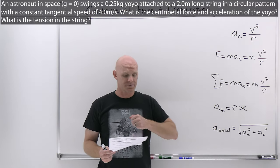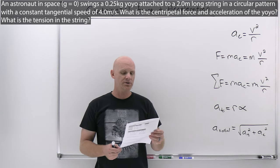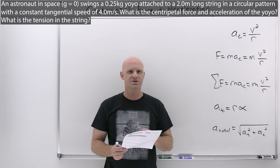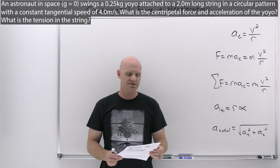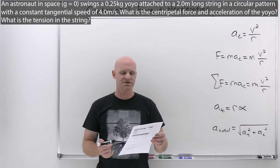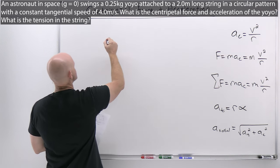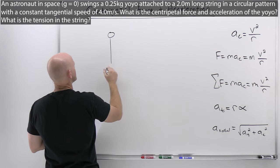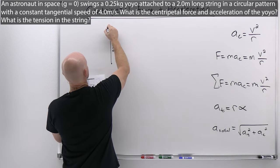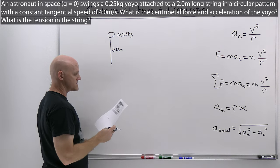The first problem: an astronaut in space where gravity equals zero swings a 0.25-kilogram yo-yo attached to a 2.0-meter-long string in a circular pattern with a constant tangential speed of 4.0 meters per second. Constant tangential speed means this is uniform circular motion. The string is 2.0 meters long, the yo-yo has a mass of 0.25 kilograms, and a constant tangential speed of 4.0 meters per second.